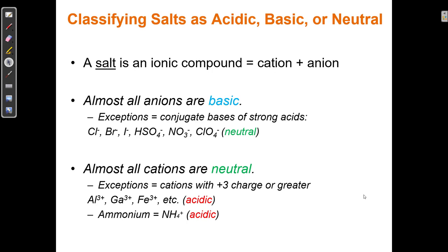When determining if a salt is an acid, a base, or neutral, we have to consider both parts of all salts: a cation and an anion. Cations are either going to be acids or neutral — a cation cannot be a base. Anions can either be bases or neutral, and with the exception of some amphoteric ions, anions are generally not acidic.